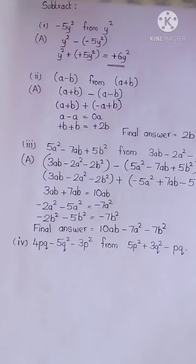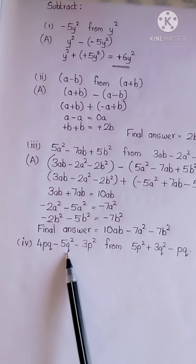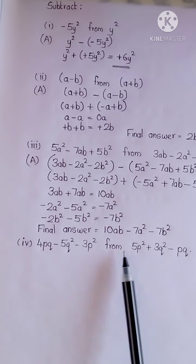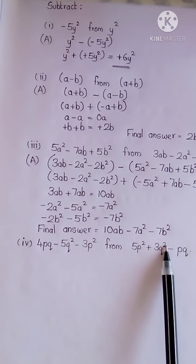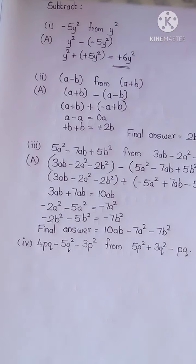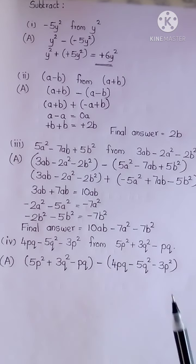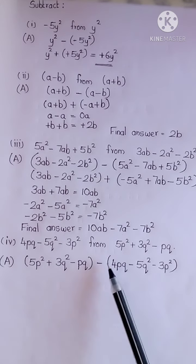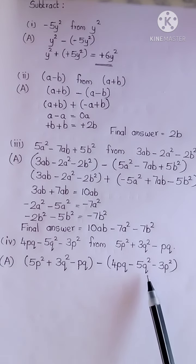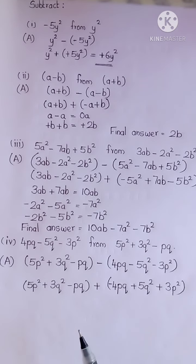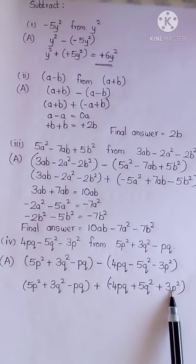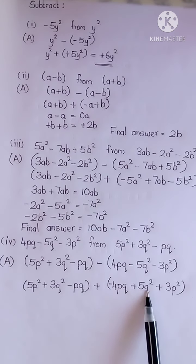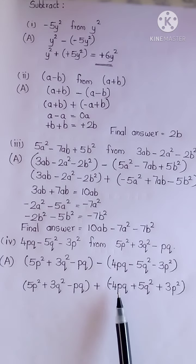Let us see the fourth question: subtract 4pq minus 5q square minus 3p square from 5p square plus 3q square minus pq. Now I have written the algebraic expression for this statement. First expression as such, subtraction sign changes to addition sign, additive inverse of the second expression. Now combine the like terms: 5p square plus 3p square, plus 3q square plus 5q square, minus pq minus 4pq, and apply the rule of addition.